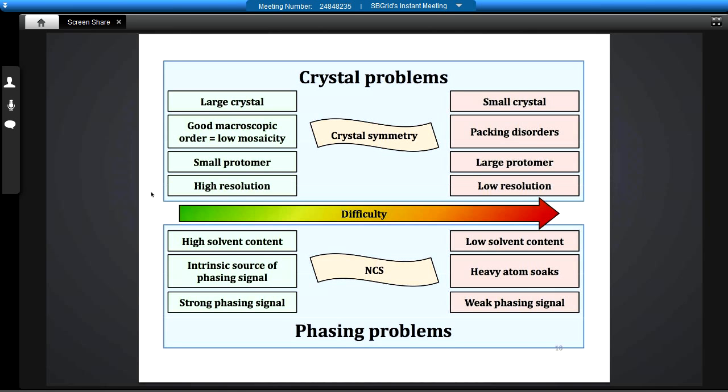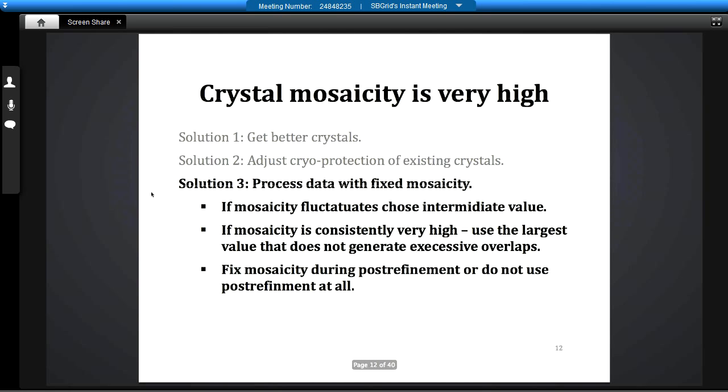How to find the biggest issue? Let's start from the crystal. In case of crystal, it could be either microscopic order, so you have terrible mosaicity. It could be microscopic order. Basically, crystal doesn't diffract in spite of having 500 micron size in each direction. You may have actually very small crystal, and it's not clear what you should do next. You have also various types of pseudo-symmetry and anisotropic diffraction.